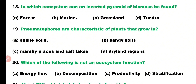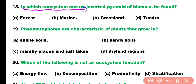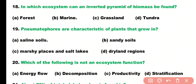Question number eighteen. In which ecosystem can an inverted pyramid of biomass be found? Options: forest, marine, grassland, or tundra? Correct answer is option B. In a marine or aquatic ecosystem, the pyramid of biomass can be inverted.